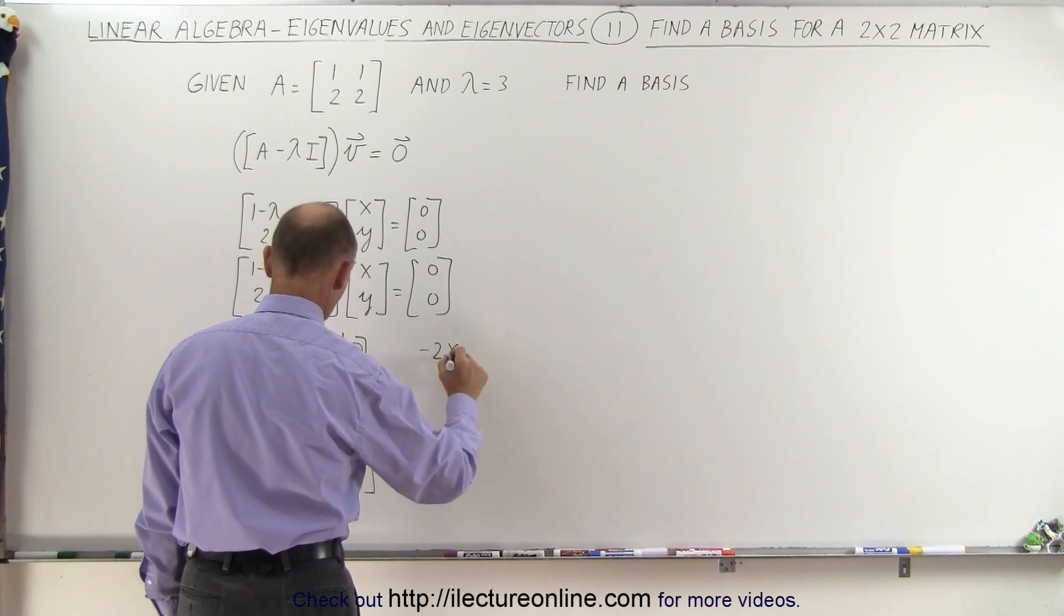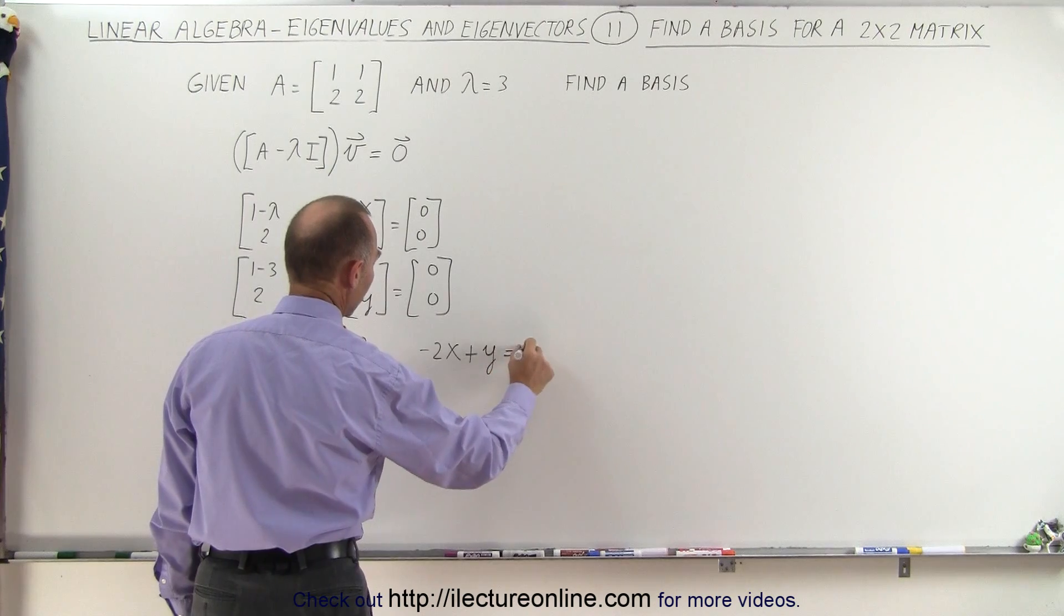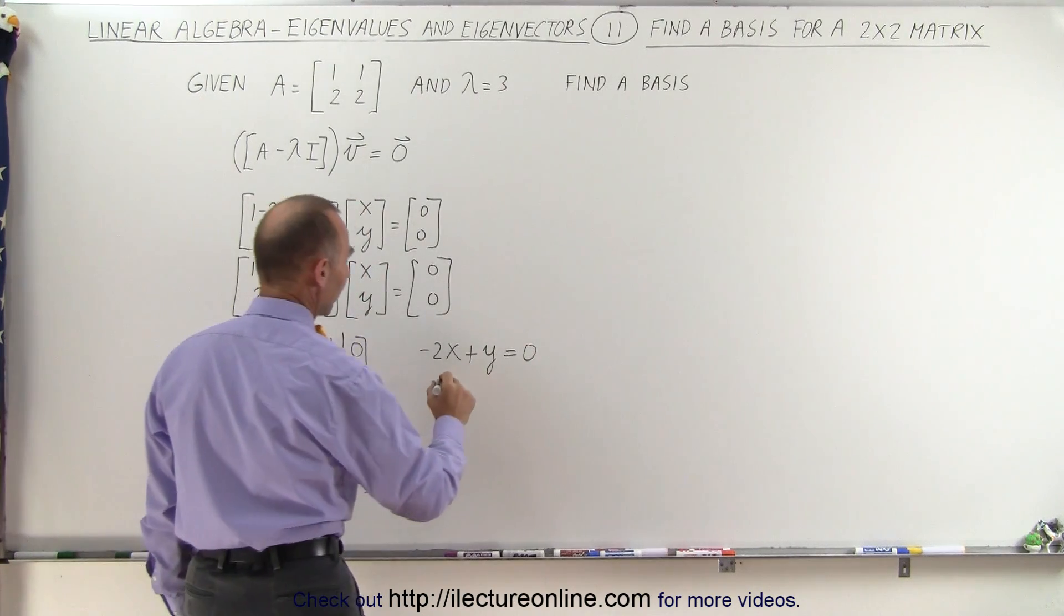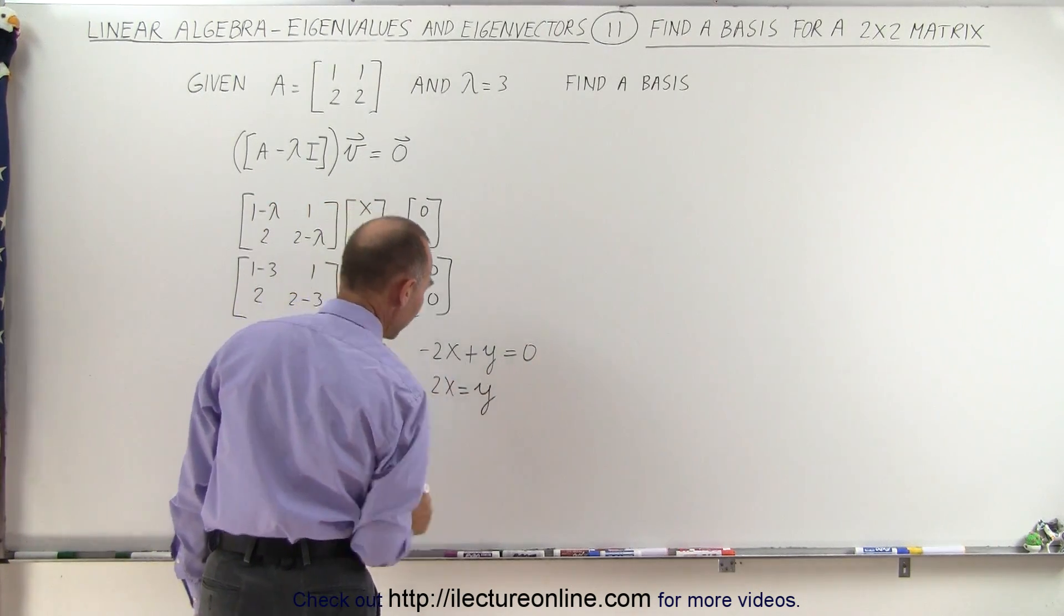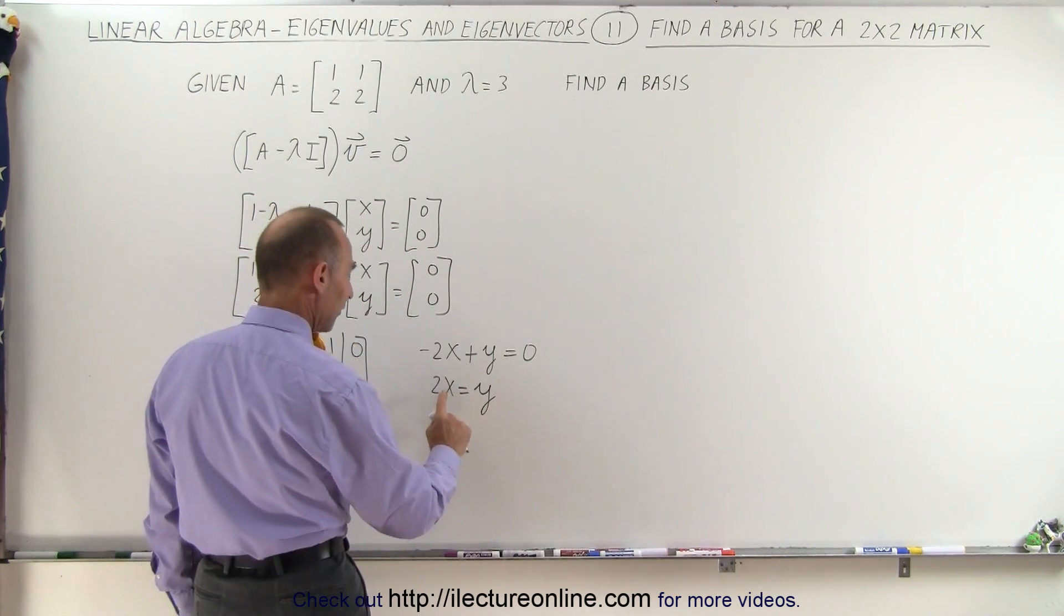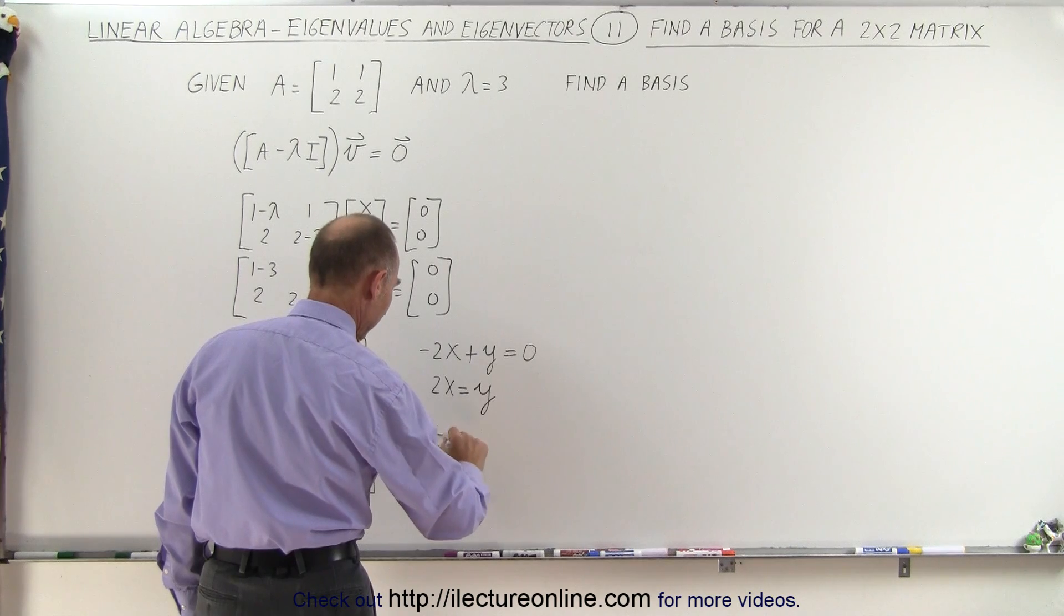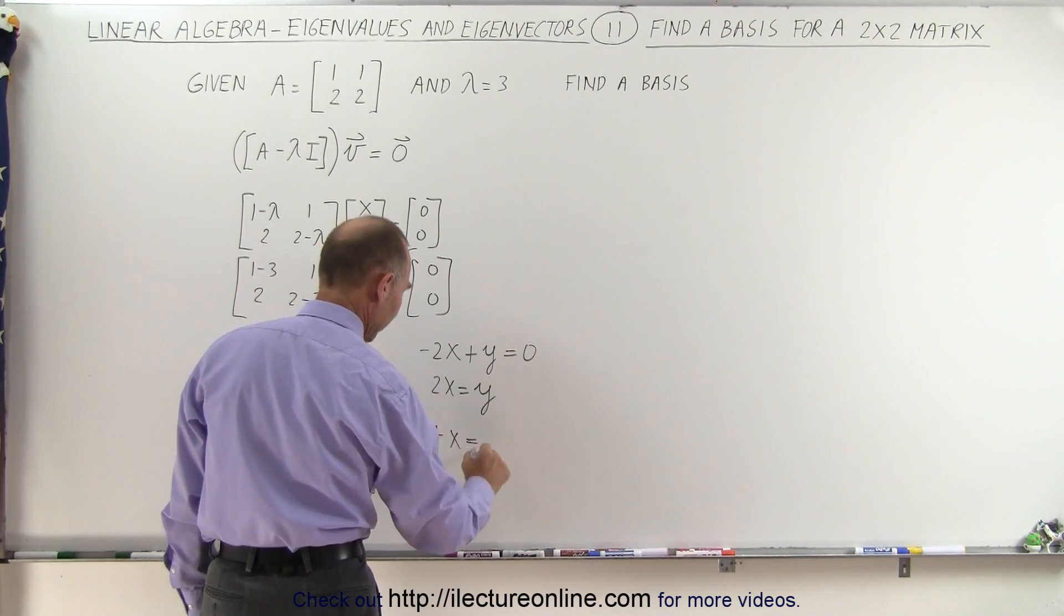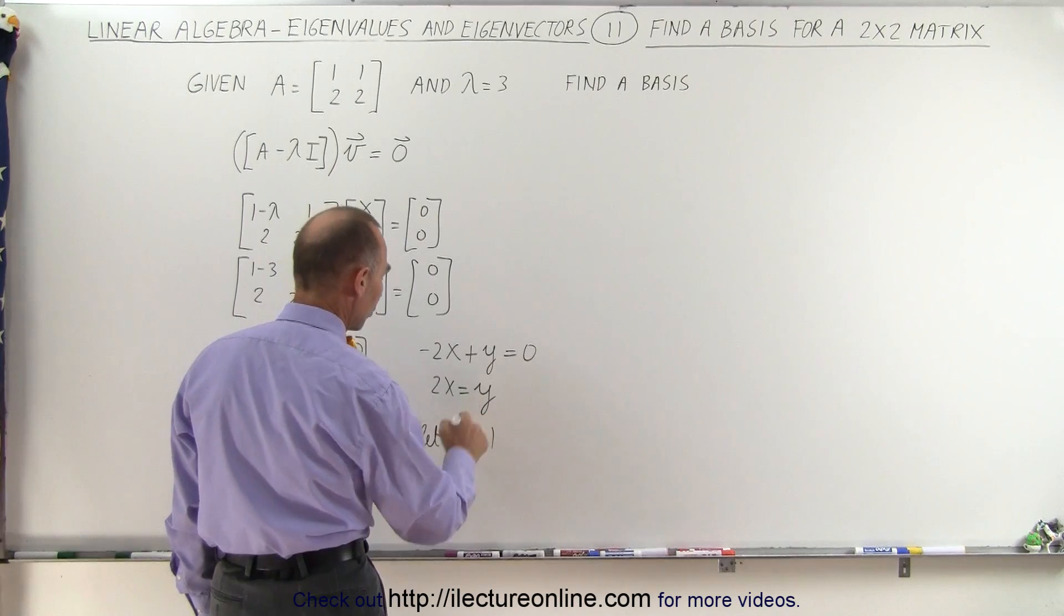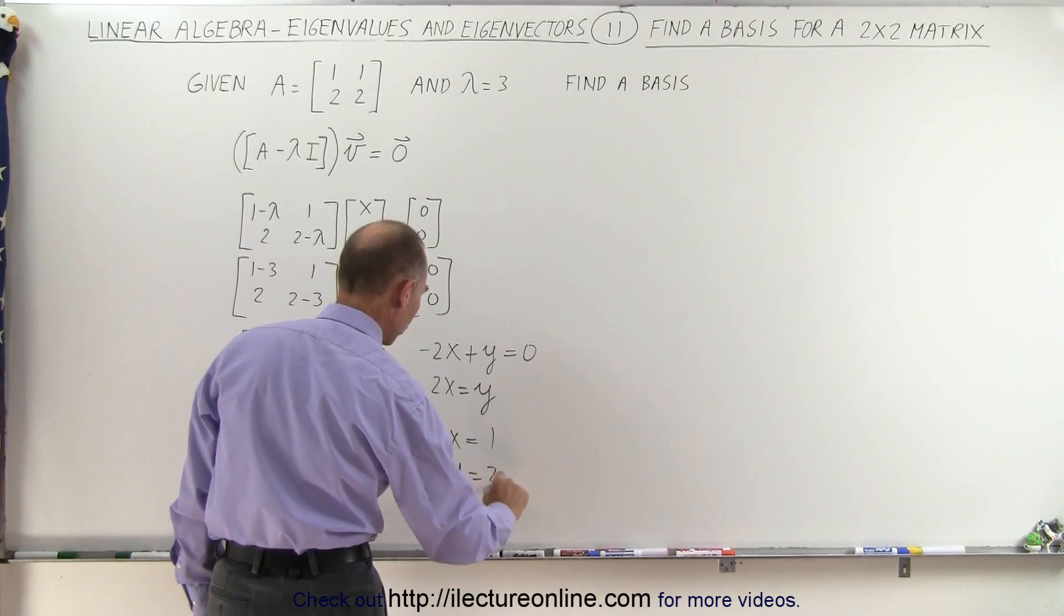minus 2x plus y equals 0, or we can say that 2x equals y. Then if x is equal to 1, so therefore we let x equal the coefficient of the other variable 1. If that's true, then 2 times 1 equals y, therefore y equals 2.